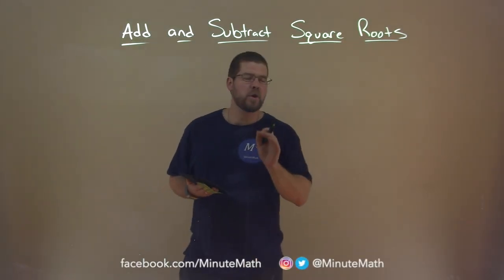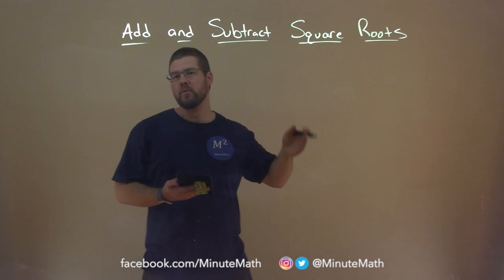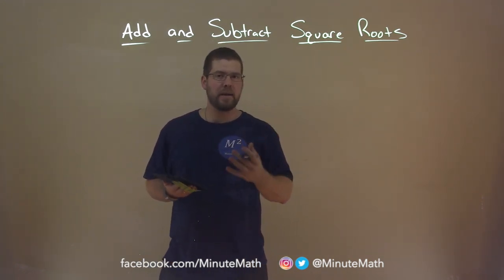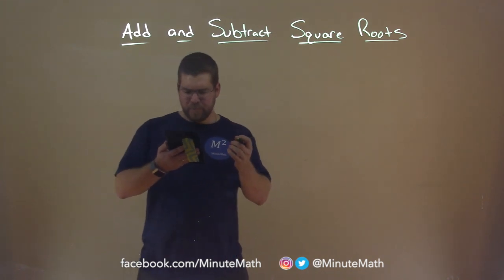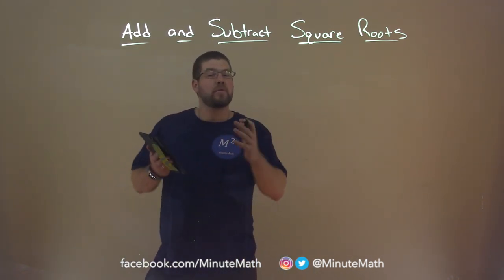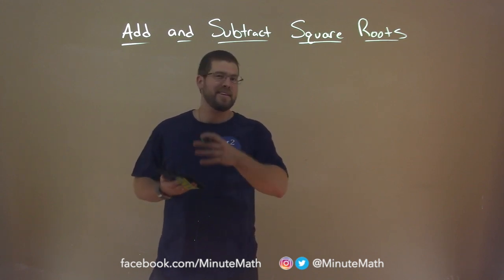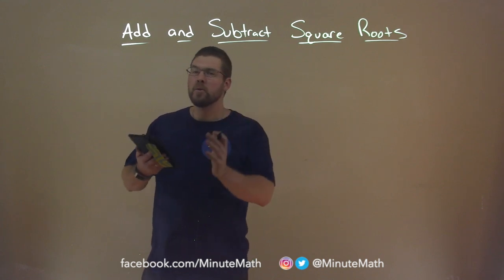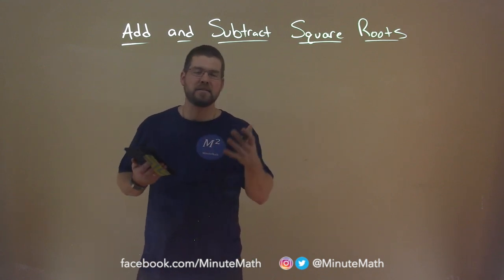One thing to note is that we can only add two square roots directly if the number inside the square root is the same, the radicand. So let's keep that in mind, and we have to use some of our rules to manipulate the expression or the radical to make it look the way we want so that we can add and subtract them.